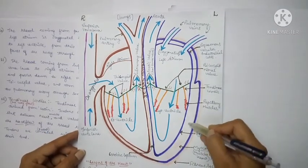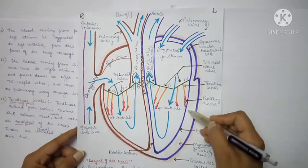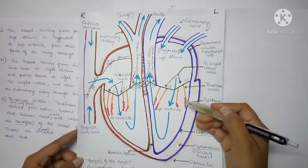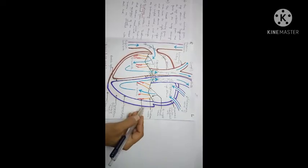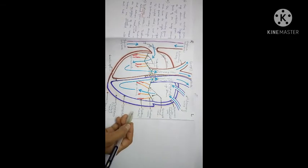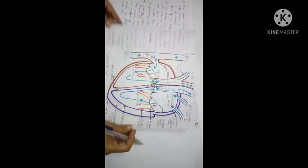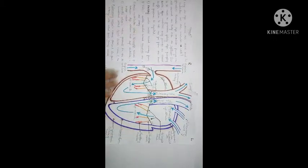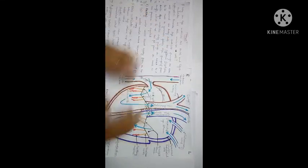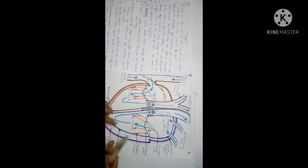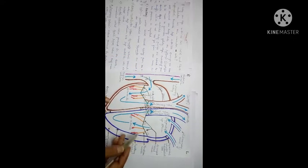This layer is called the myocardium. 'Myo' means muscles and 'cardium' means your heart, so myocardium means the muscles of the heart. These muscles allow the heart to contract. The outermost layer is called the fibrous pericardium.